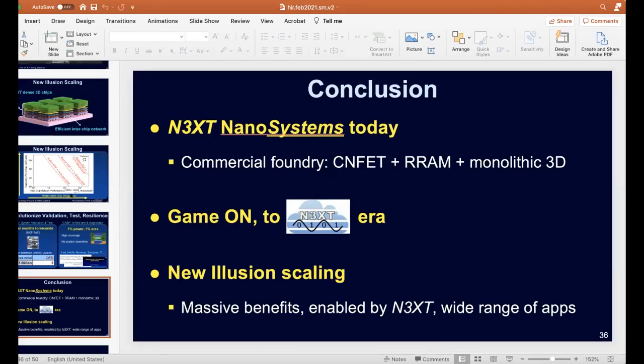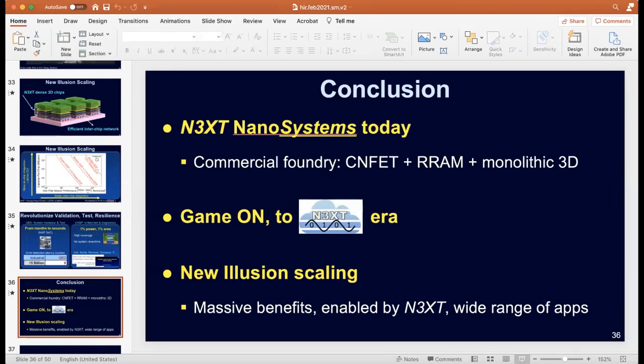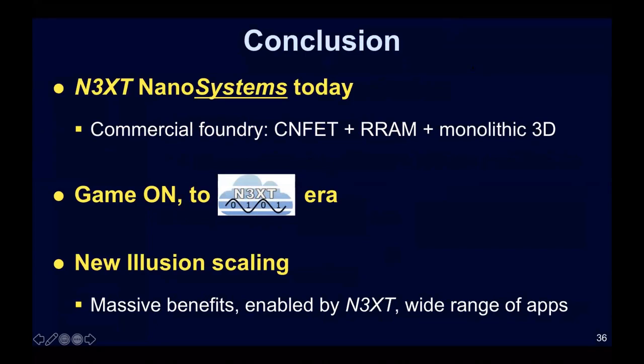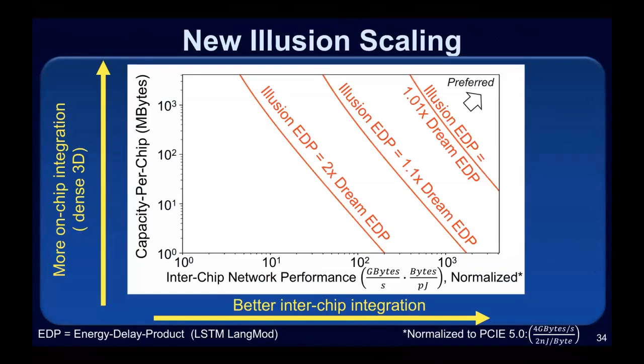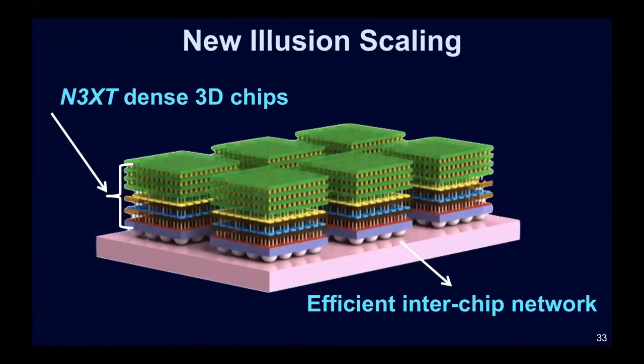We do have a couple of questions. One is about best-of-breed HIR versus 3D IC. The answer is: it's not 3D IC or heterogeneous integration — it's 3D IC and heterogeneous integration. Because at the end you need to create the illusion of the dream chip. In hardware we are already showing an 8-chip illusion, and in simulation we have shown 64-chip illusion — equivalent to six generations of technologies. The y-axis is 3D on-chip integration and the x-axis is heterogeneous integration of multiple chips, and these two are fungible along the illusion lines.